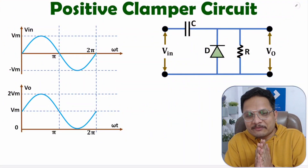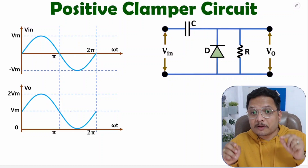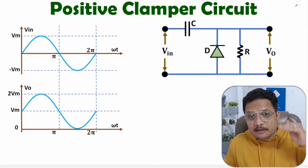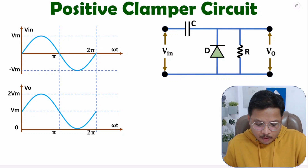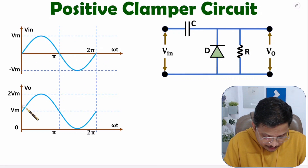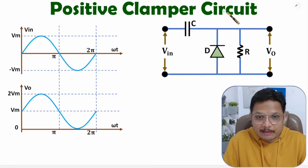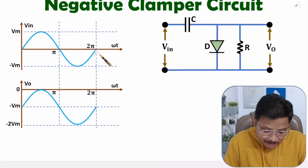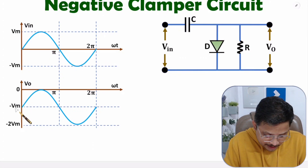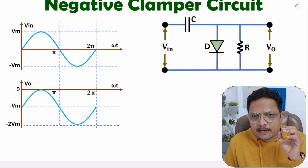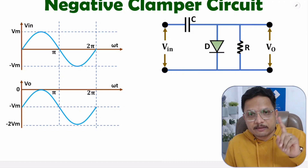Hello friends, welcome to Engineering Funda family. In this video, I will explain positive and negative clamper circuits. First of all, you need to understand what a clamper circuit is. A clamper circuit provides DC shifting to AC input. In a positive clamper circuit, the AC input is shifted by plus Vm value. In a negative clamper circuit, the AC input is shifted by minus voltage.